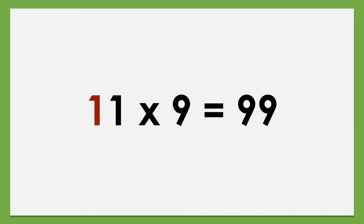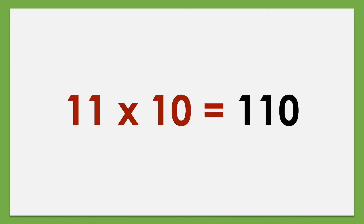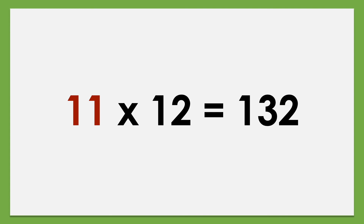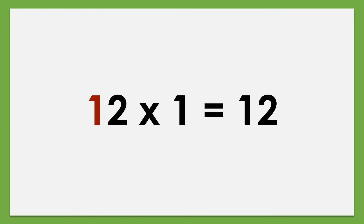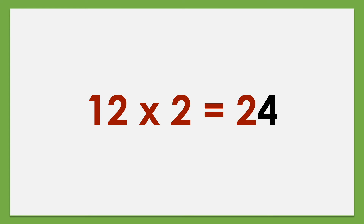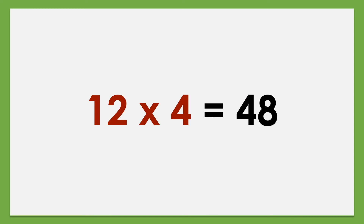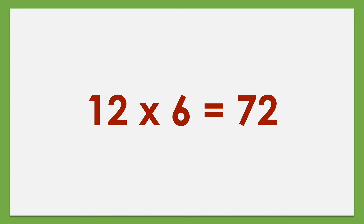11 times 8 equals 88, 11 times 9 equals 99, 11 times 10 equals 110, 11 times 11 equals 121, 11 times 12 equals 132. Set of 12: 12 times 1 equals 12, 12 times 2 equals 24, 12 times 3 equals 36, 12 times 4 equals 48, 12 times 5 equals 60, 12 times 6 equals 72, 12 times 7 equals 84.